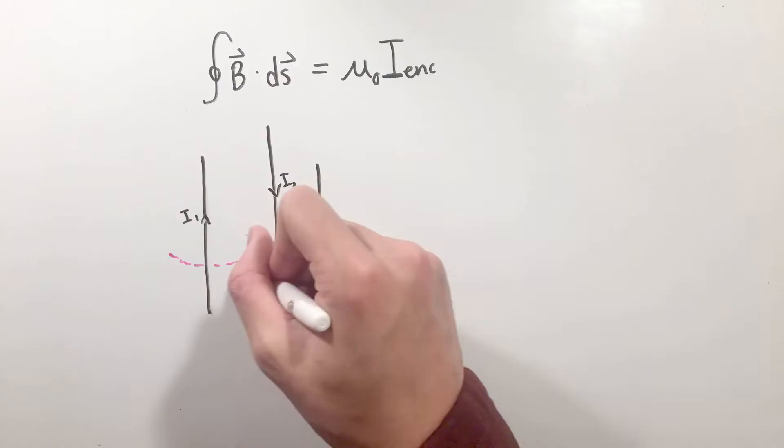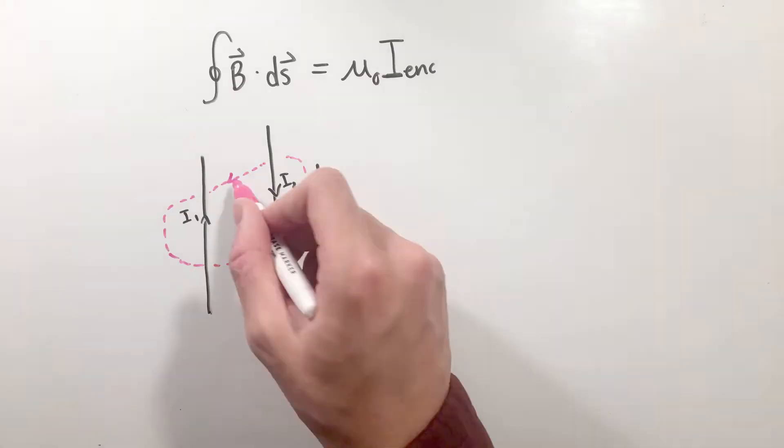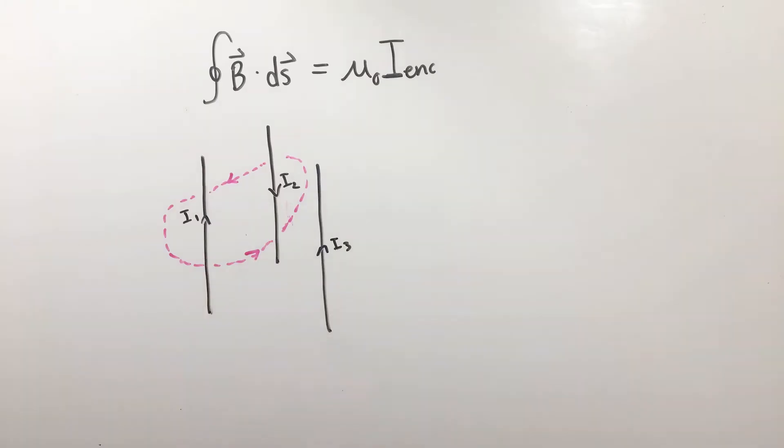Similar to Gaussian surfaces, the process of using Ampere's Law involves choosing an Amperian loop, or a closed loop to integrate around, along with a loop direction. The rest of the equation is built on your chosen loop and direction.